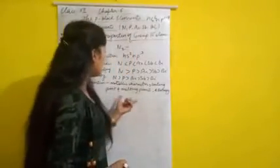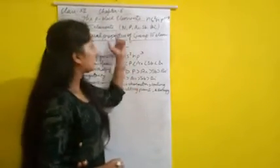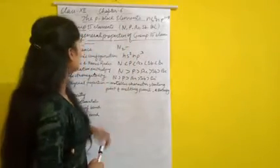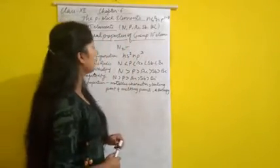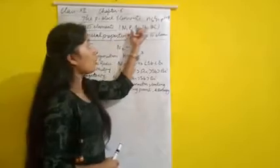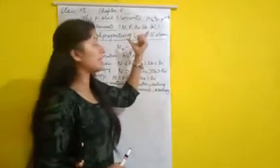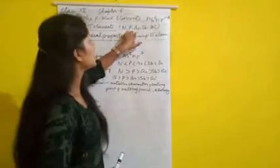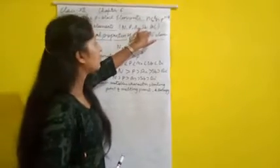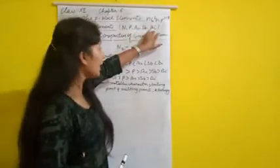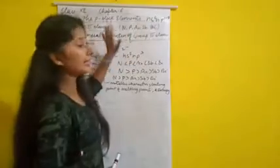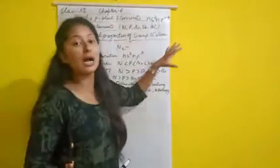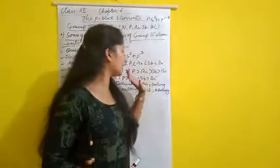Moving to metallic character: metallic character increases on going down the group. In group 15, there are all three types of elements present. Nitrogen and phosphorus are non-metals, arsenic and antimony are metalloids, and bismuth is a typical metal. So metallic character increases from top to bottom.